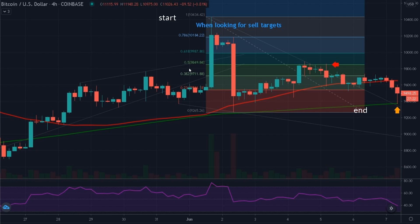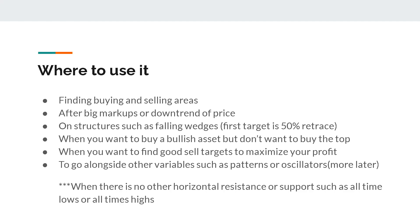Mainly, you're going to be using patterns. Let's say you have a falling wedge — from the top of your falling wedge to the bottom point, you can use Fibonacci. And once you reach that 23.6% retrace, you can pretty much aim for that 50% retrace to sell. You want to use Fibonacci for finding buying and selling areas after big markups or downtrends of price on structures such as falling wedges, where your first target would be the 50% retrace. When you want to buy a bullish asset, you don't want to buy the top. Use it to find good sell targets alongside other variables such as patterns or oscillators. Also, when there is no other horizontal resistance or support such as an all-time low or all-time high, Fibonacci can help you find targets that wouldn't be on your chart otherwise.